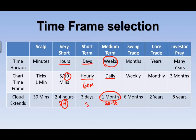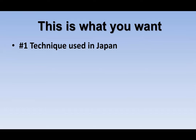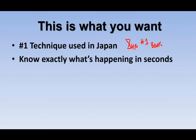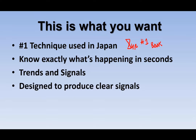Once you understand that, focus on this: it's been the number one technique used in Japan — the best-selling book on technical analysis in Japan eight years in a row. Translating it from Japanese can be a pain, but once you learn it, you'll know exactly what's happening in seconds. It's designed to give you really good trend signals. The word Ichimoku stands for 'at a glance' — within two or three seconds you'll know whether to go long, go short, or pass.